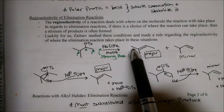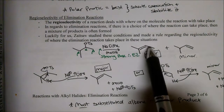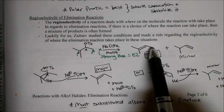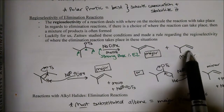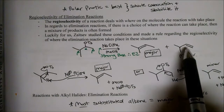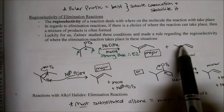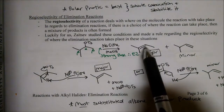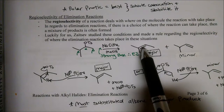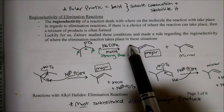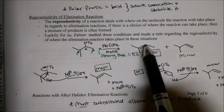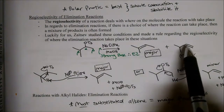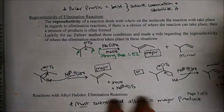You can see here this is a trisubstituted alkene - one, two, three substitutions. And over here, this is actually a monosubstituted alkene, just one group coming off of that alkene. Just look at the actual alkene and how many groups are coming off of it: we've got one, two, three here, and we only have one group coming here.